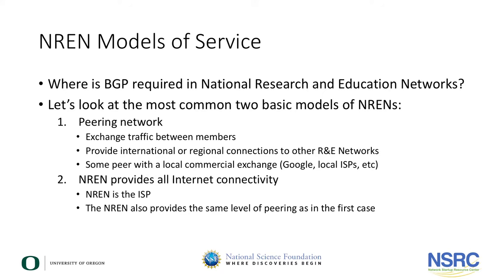In this clip, we will discuss where a national research and education network will need to use BGP. There are two basic models of service for NRENs that we've seen around the world. A peering network that provides a limited set of routes that does not provide complete internet access. The peering NREN provides routes that will exchange traffic between connected members and to the rest of the global research and education networking community.